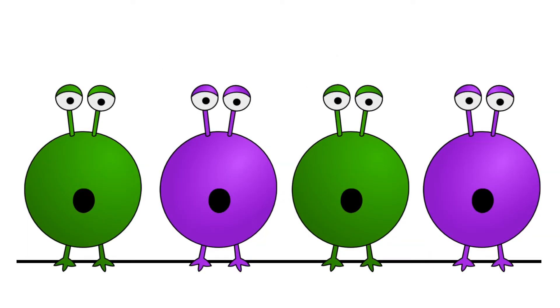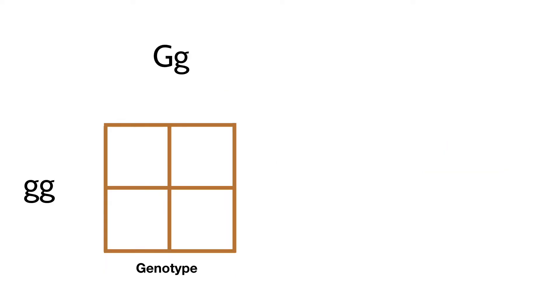If you said half green and half purple, then you were right. Every alien child is going to get one copy of the recessive gene from the purple parent. The green parent will give half the offspring the dominant copy of the gene, and half the recessive copy.